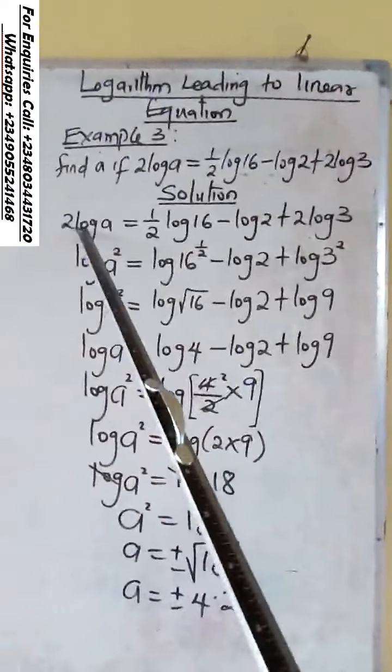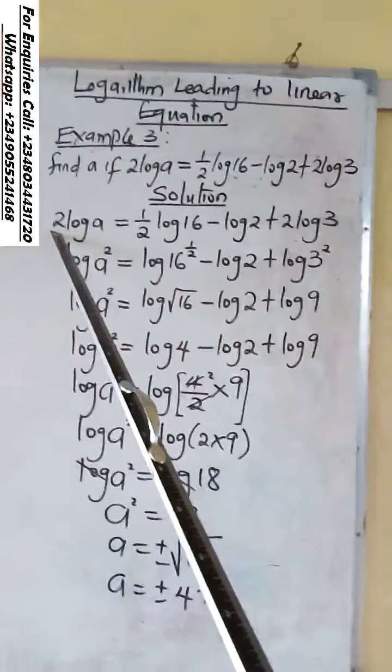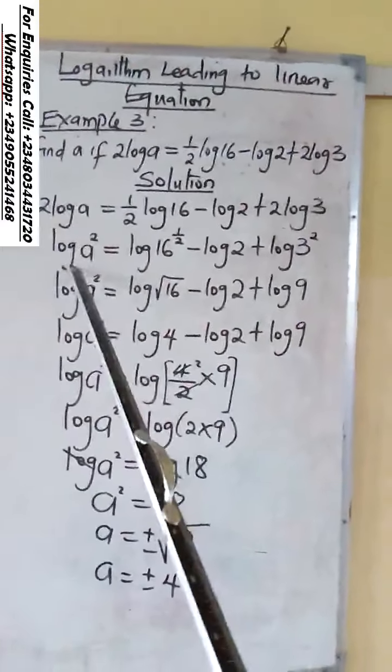The first log, there is two at the front of the log. You remove it. It will be A raised to power 2.